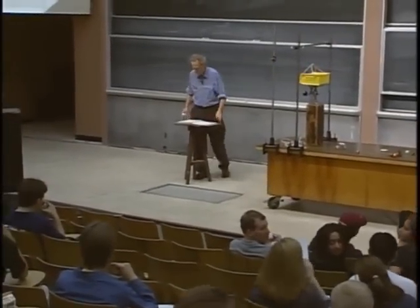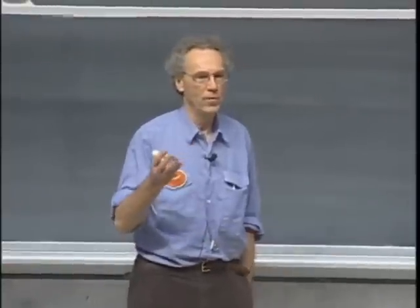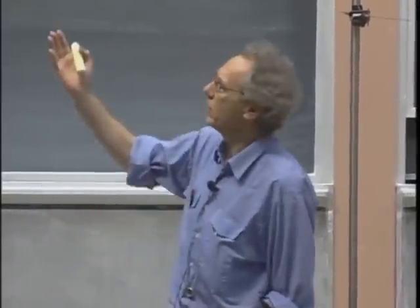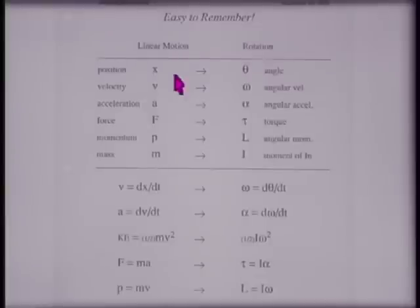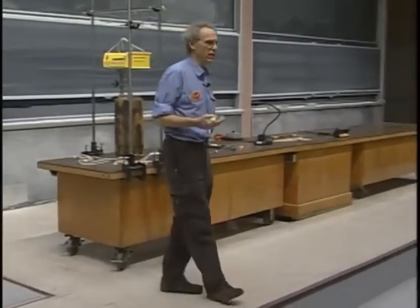During the past four lectures, we have dealt with angular momentum, torques, rolling objects, and rotations. Many of you think we now have to remember a whole zoo of equations, but that's not true. If you simply know how to make a conversion from linear symbols to rotation — position becomes angle, velocity becomes angular velocity, acceleration becomes angular acceleration, and so on — then you can make the conversions very easily.